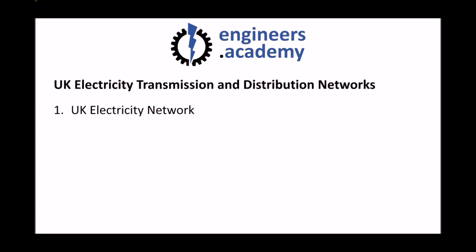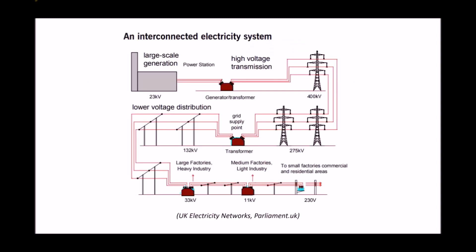Let's begin with a schematic diagram of what the UK electricity network looks like. In the top left-hand corner we have large-scale generation — that could be from the combustion of fossil fuels, from renewable energy such as a wind farm, or from a nuclear power station. Specifically here we're talking about large-scale generation. Typically, the energy leaving a large-scale generation site or power station would be around 23,000 volts.